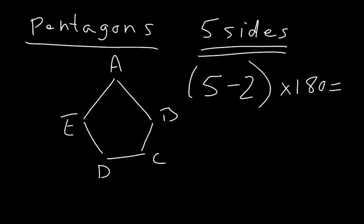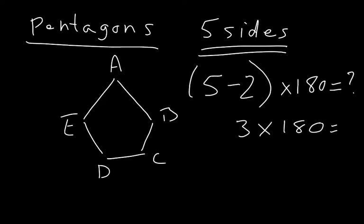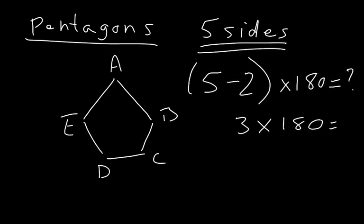Five subtract two is three, times 180 equals 540 degrees. So that means the interior angles A, B, C, D, and E must all add up to give you 540 degrees.